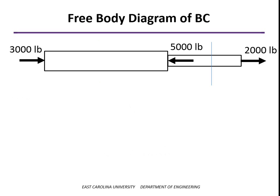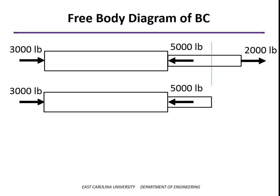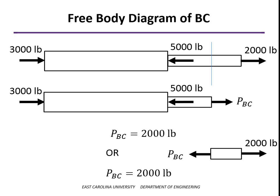Now if I move over and make a cut somewhere between B and C, and look at everything to the left of that cut, for this to be in equilibrium there needs to be on the cut face the axial force P sub BC. We can see that P sub BC is in the direction shown, so it is in tension at 2,000 pounds. We also could have taken everything to the right of the cut and gotten the same answer — PBC, 2,000 pounds in tension. In both cases, I've drawn the arrow pointing away from the cut face, and a positive result means that segment is in tension.